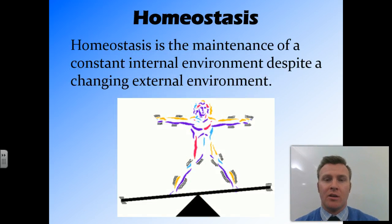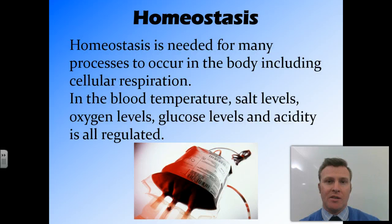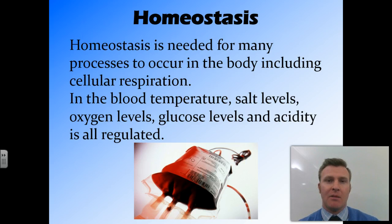Homeostasis is the maintenance of a constant internal environment despite a changing outside environment. So inside the body stays constant while outside the body changes. An example of this would be temperature — outside the body might get hotter or colder, but inside the body needs to stay at a constant 37 degrees. The reason that we need homeostasis is so that all the chemical processes in the body can happen. Outside of these particular ranges, the enzymes that catalyse those processes denature and the processes cannot occur. Some of the things regulated by homeostasis include temperature, salt levels, oxygen levels, glucose levels, and acidity, all regulated within the blood system — so in the circulatory system.